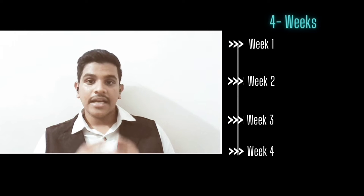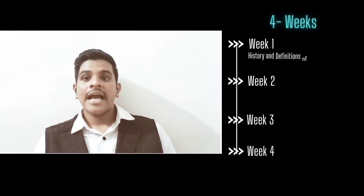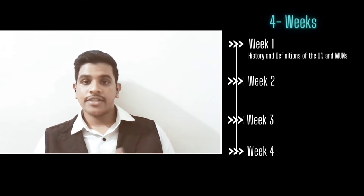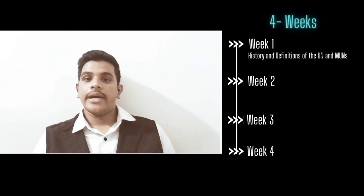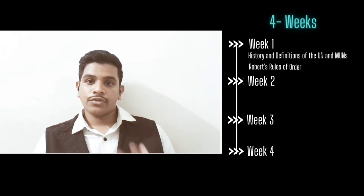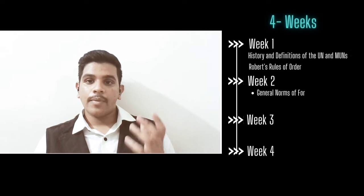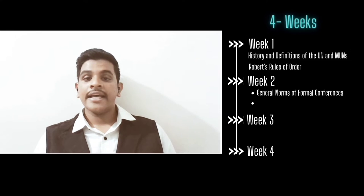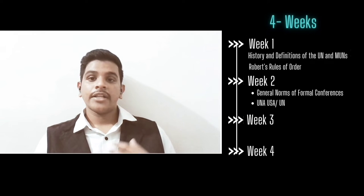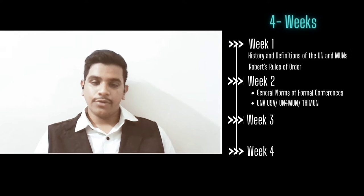In this four-week course we will explore what Model UN conferences are by taking a look at the definitions and historical backgrounds of the United Nations and Model UN conferences. Following this, we will look into how Model UN conferences function by understanding various rules they follow through Robert's Rules of Order, General Norms of Formal Conferences, and three specific kinds of rules and procedures widely followed throughout the world: namely the UNAUSA procedure, the UN for MUN procedure, and the Thayman procedure.